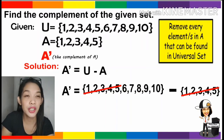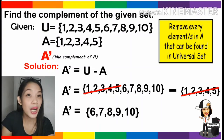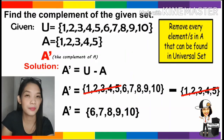And therefore, what are the elements left? The complement of A will be 6, 7, 8, 9, and 10.